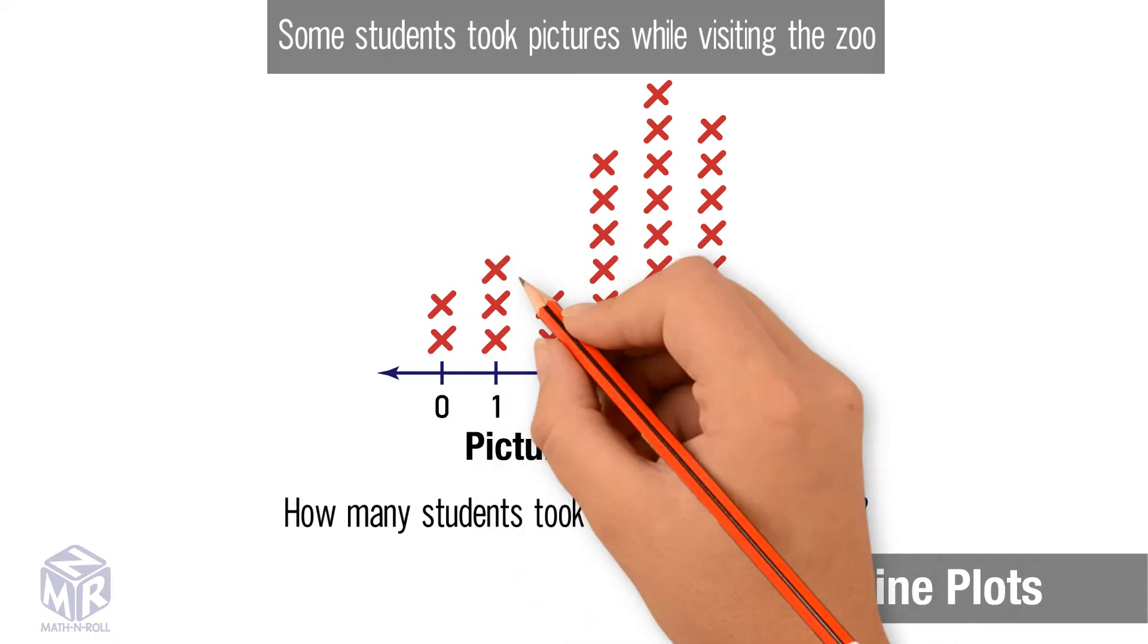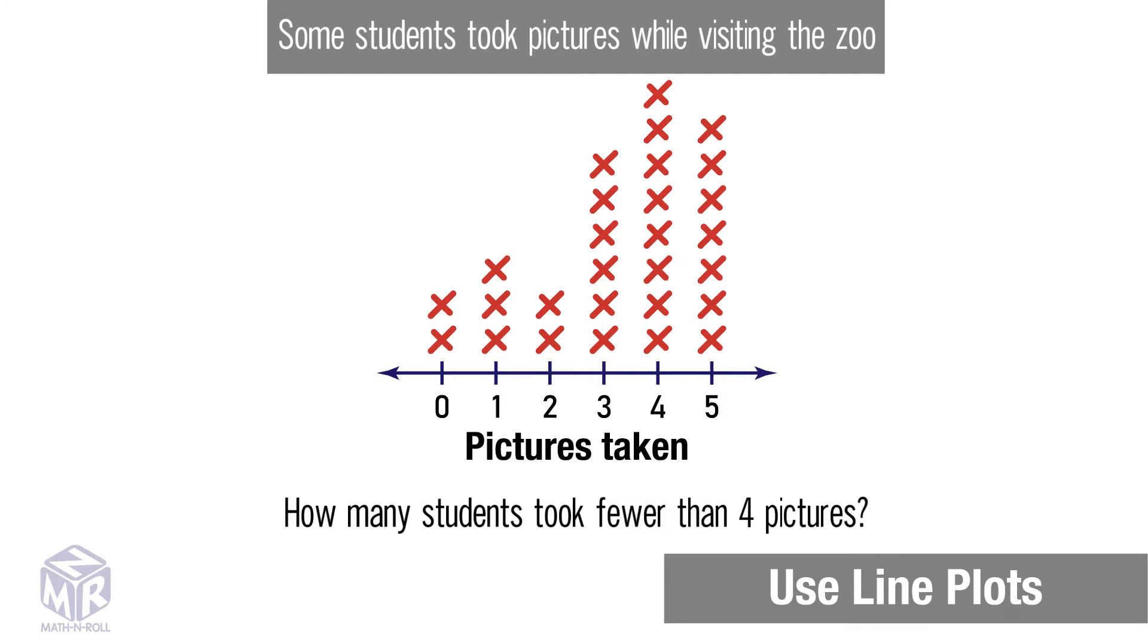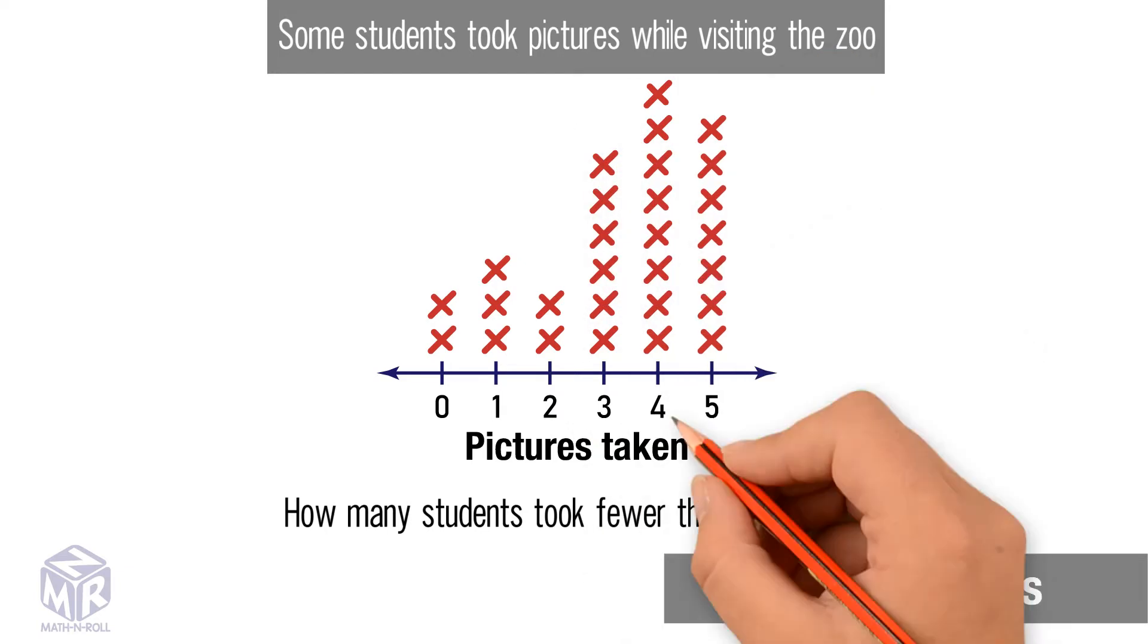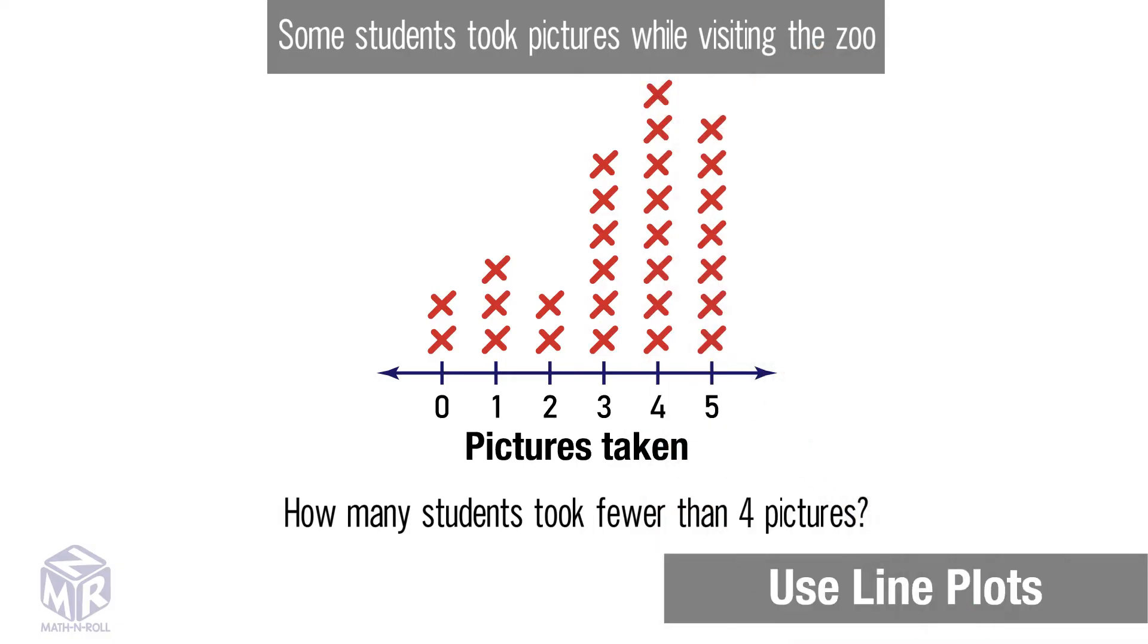Two students took two pictures. Six students took three pictures. Eight students took four pictures. And seven students took five pictures. We want to know how many students took fewer than four pictures.